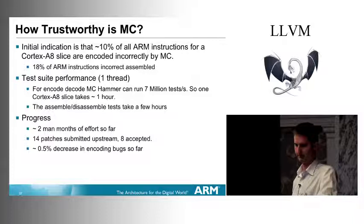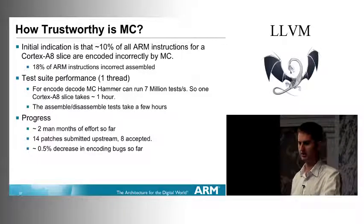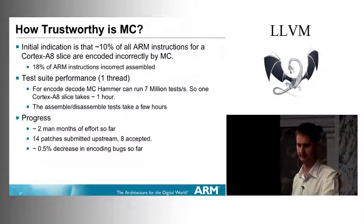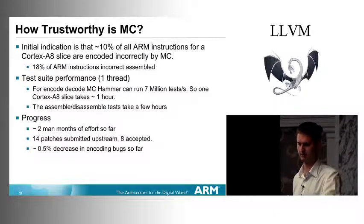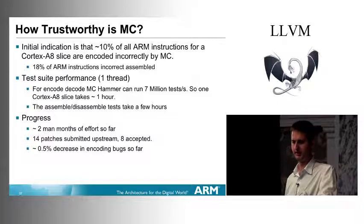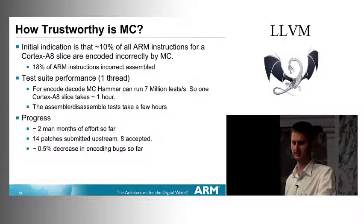MC Hammer, running with one thread — this is a very parallelizable problem, though we've implemented it in a fairly basic way — can run 7 million tests per second. A Cortex-A8 takes about an hour just to run through all instruction encodings. The ones with string manipulation take considerably longer. So you couldn't put this into an MC regression test — it's too large.